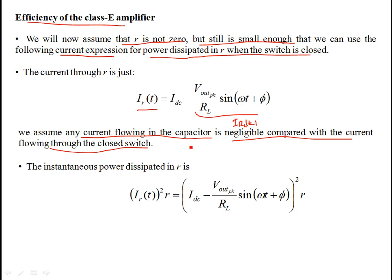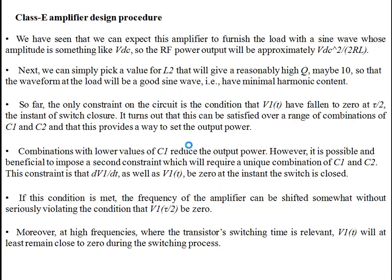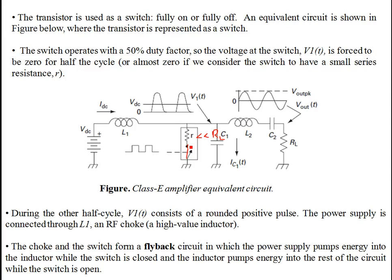When the switch is closed, the RF choke L1 gets energy from the supply — the supply pumps energy into the RF choke. When the switch opens, it pumps energy back to the rest of the circuit; that's the flyback effect. So if the switch is closed, L1 charges up, getting energy from the supply, and once the switch opens, L1 provides energy back to the rest of the circuit.